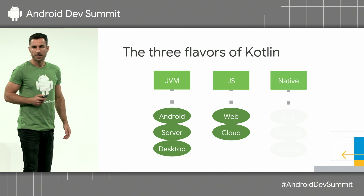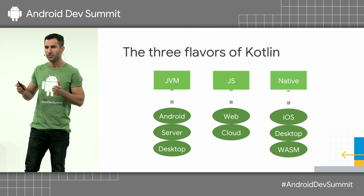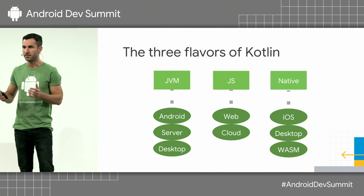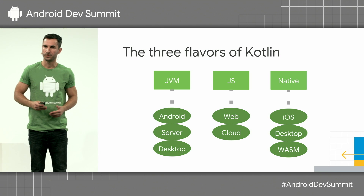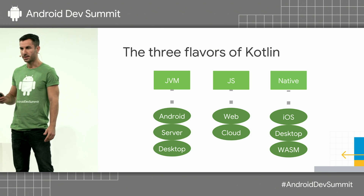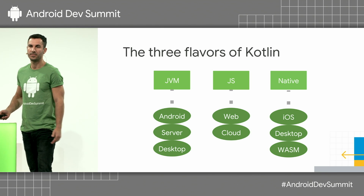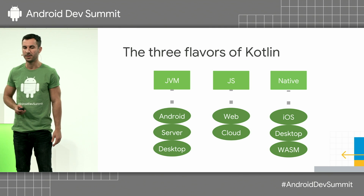And then there's Kotlin Native, which compiles down to machine code in native libraries that can run or target various platforms, such as iOS, desktop apps, even WebAssembly, and even Android.